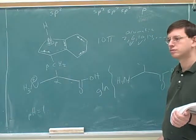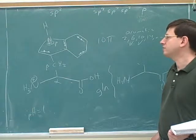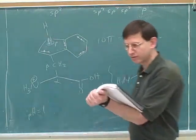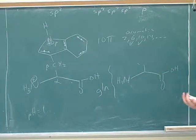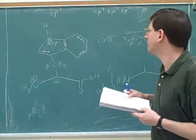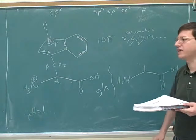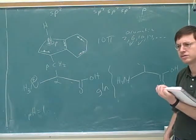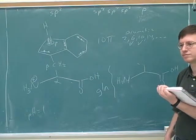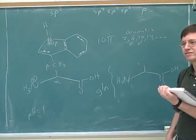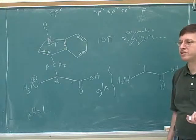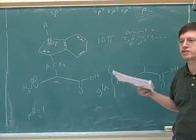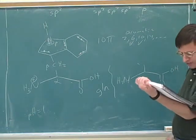If a lone pair is participating in aromaticity, it's not available to be donated in a base reaction. Therefore this is neither an acidic nor a basic side chain. This is not a basic side chain even though it has a nitrogen with a lone pair, because the lone pair is tied up in the aromatic overlap. You can't assume that all nitrogens are basic. Amide nitrogens are not basic, and here's another type of nitrogen that's not basic. To distinguish acidic from basic, you can look for resonance structures that would put a negative or positive charge on it.